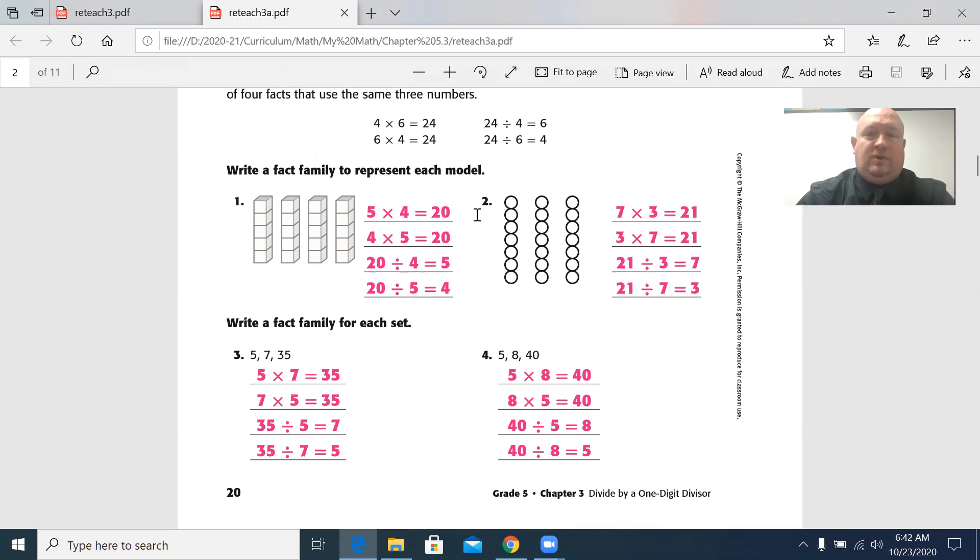So we saw that there were three rows, and there was one, two, three, four, five, six, seven. So three and seven are our factors. Seven times three is 21. Three times seven is 21. If you count them all, there's 21.